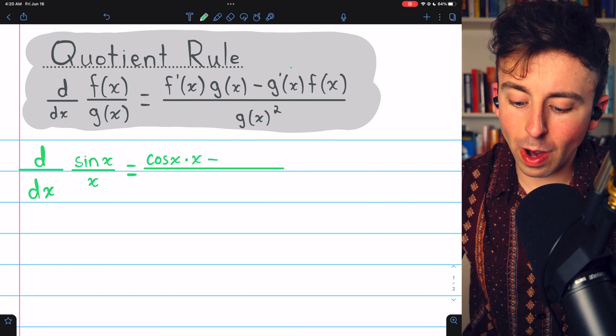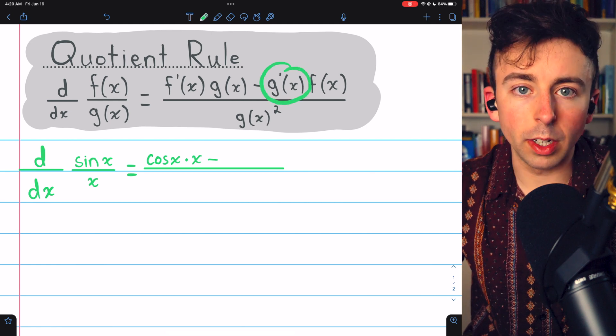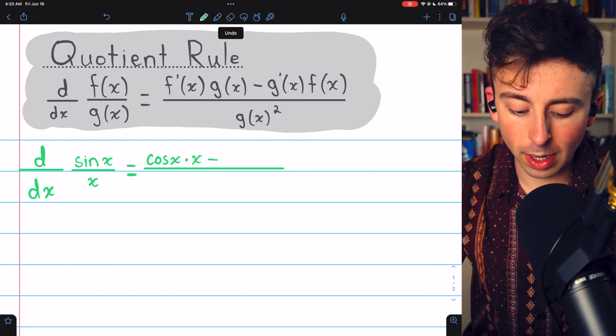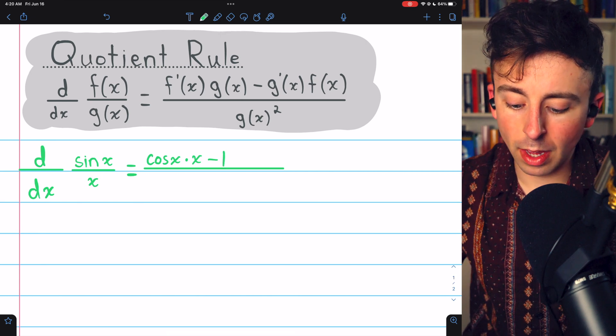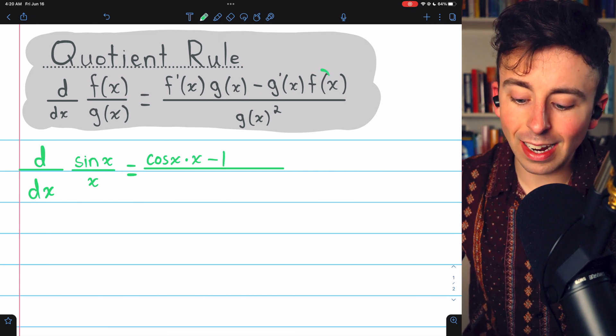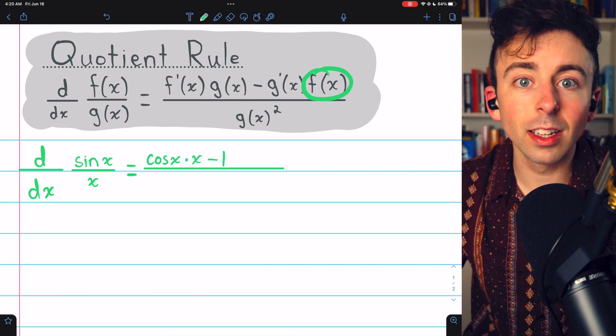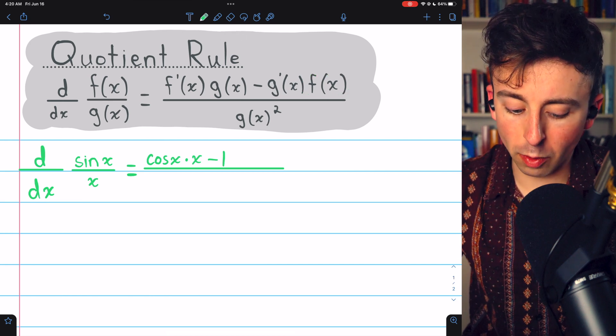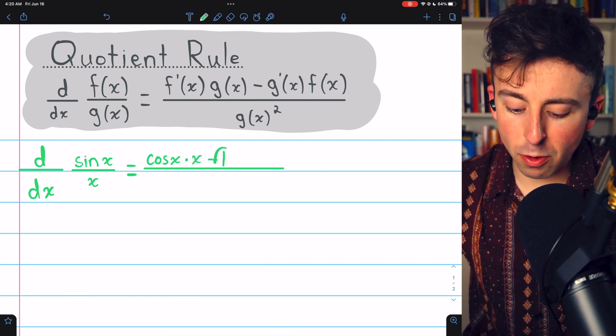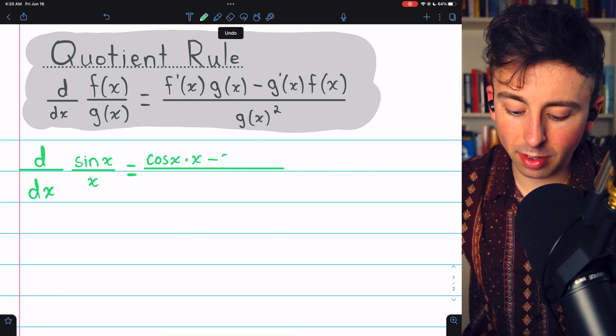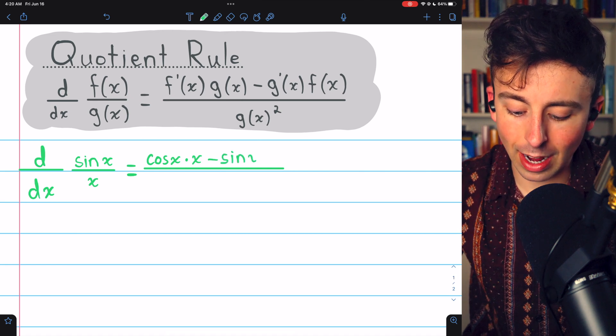Then we subtract g prime, the derivative of the denominator function. The denominator is x, its derivative is 1. So we subtract g prime times f of x, the numerator function. The numerator is sin x, and rather than writing 1 times sin x, I'll just write sin x.